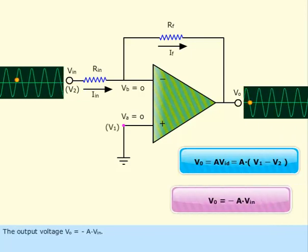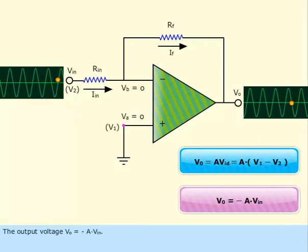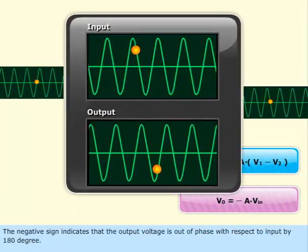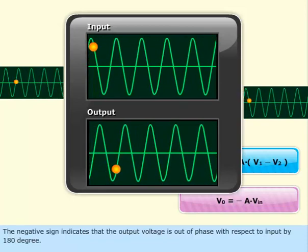The output voltage V₀ = -AVᵢₙ. The negative sign indicates that the output voltage is out of phase with respect to input by 180 degrees.